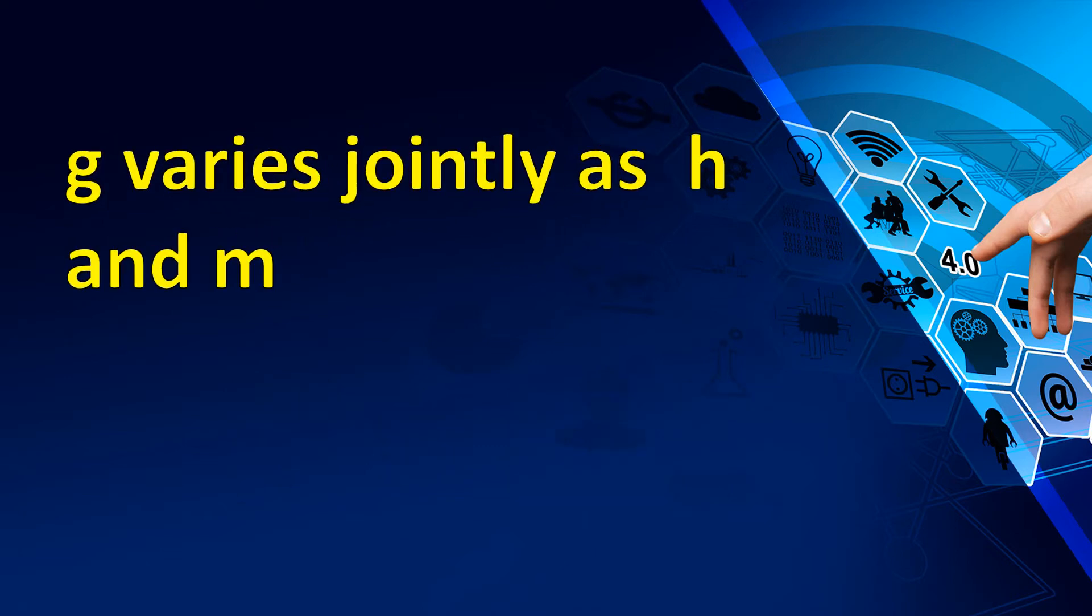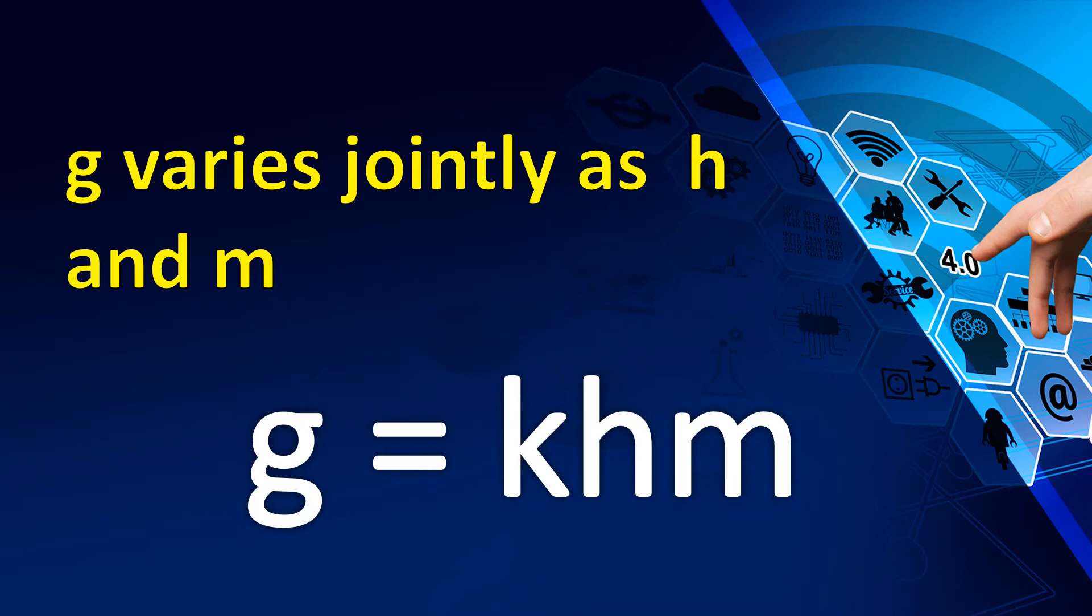Last one, if g varies jointly as h and m, paano natin sya isisulat? It is written like this: g equals k h m.